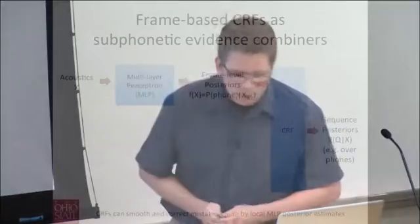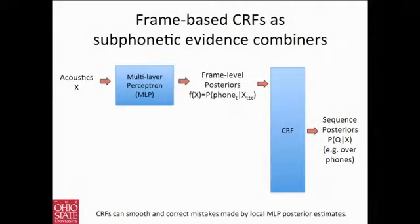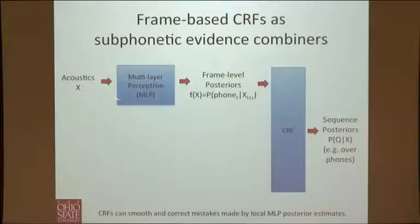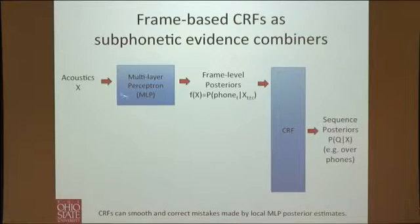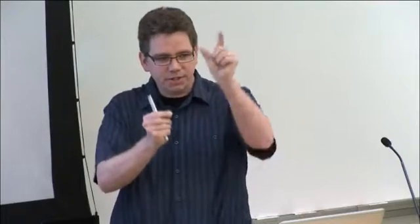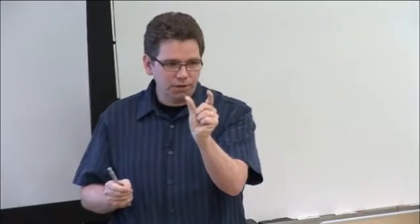This leads us to look at sub-phonetic representations such as phonological features or articulatory features to represent transcriptional differences. The interesting question becomes how to involve that in a statistical model. Growing up at ICSI where neural nets were a big thing, one approach is to take acoustics and put a multilayer perceptron to predict which phone class corresponds to a local chunk of speech.